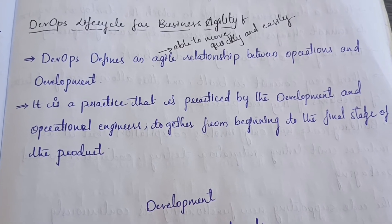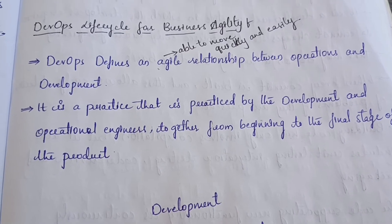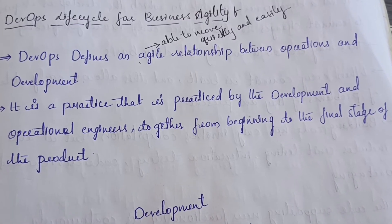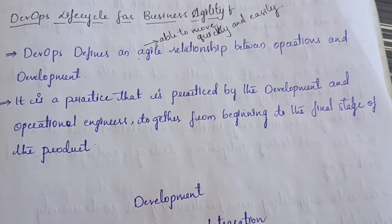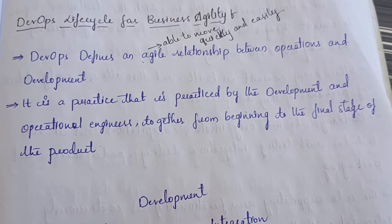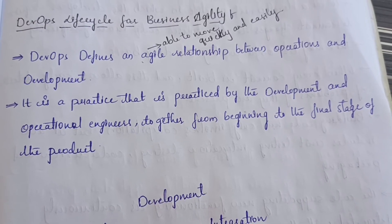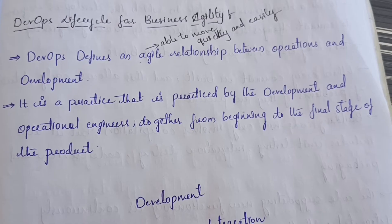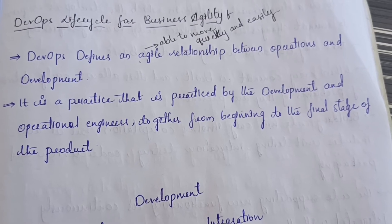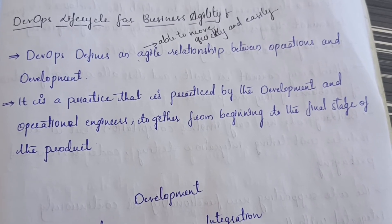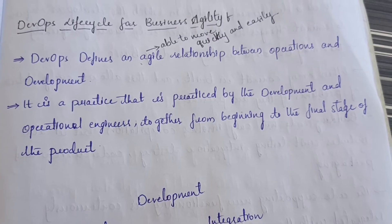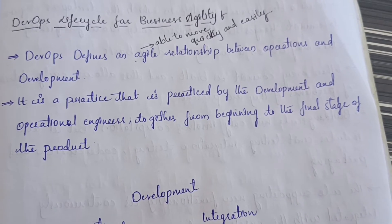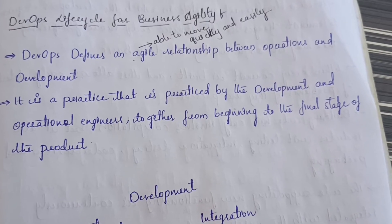Today we are going to discuss about the DevOps lifecycle for business agility. DevOps defines an agile relationship, meaning able to move quickly and easily — operations can be performed very easily and fast. This is practiced by development and operational engineers together from the beginning to the end of the product.